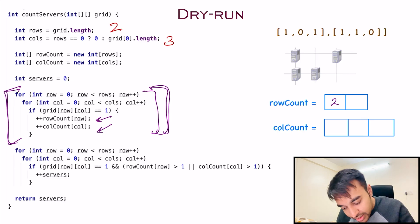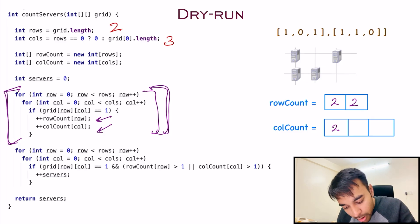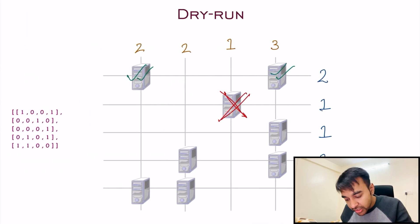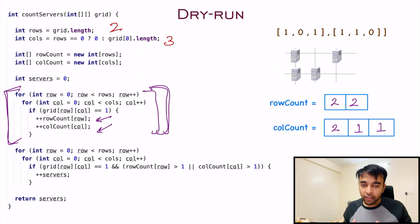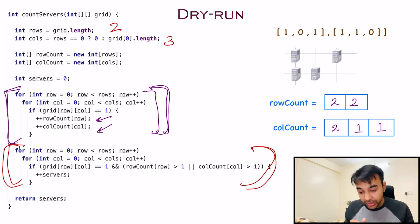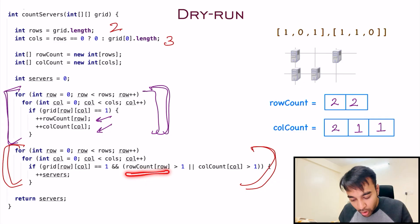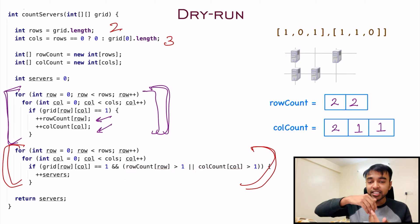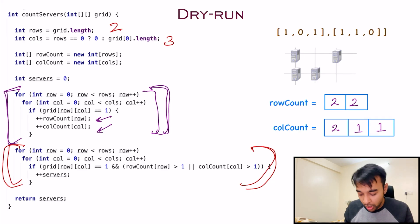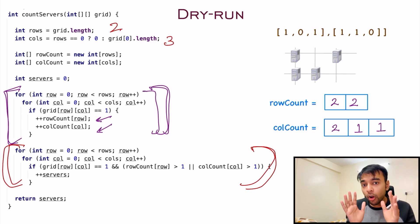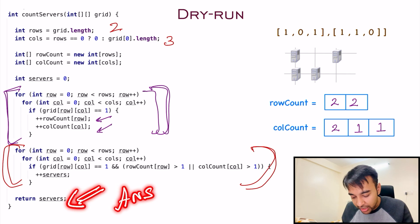Once these for loops are completed, I can populate my row counts and column counts. In the first row I will have two servers and in the second row I will also have two servers. Similarly, for columns: in the first column I have two servers, in the second column I have one server, and in the third column I have one server — these are the values we just computed. Once you have found these values, the next step is very easy. Start a for loop again and go over each server. If we find a server at any position, just check the row count and the column count for that position. If any of those counts are greater than one, that means there is one more server in the same row or one more server in the same column, and if this condition is true, just increment the count of server connections. After this loop ends, you will have a total count of all the server connections, and this is ultimately returned as the answer.